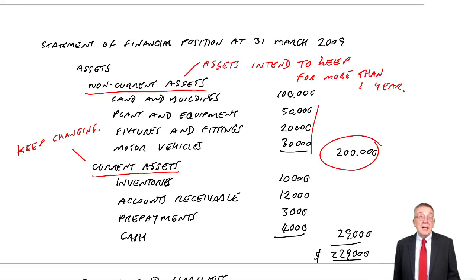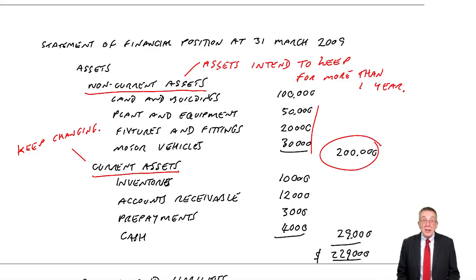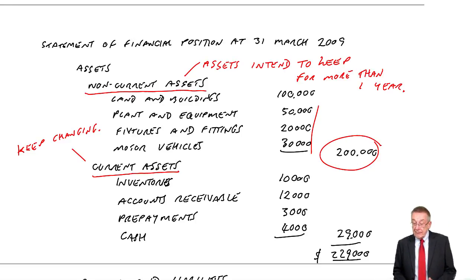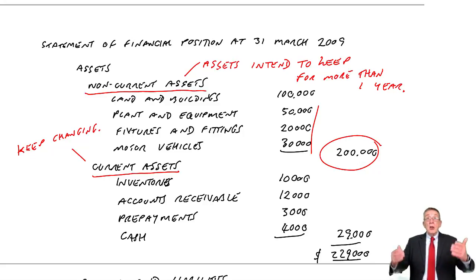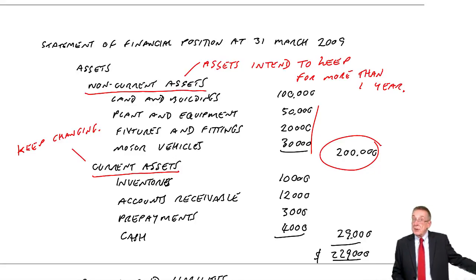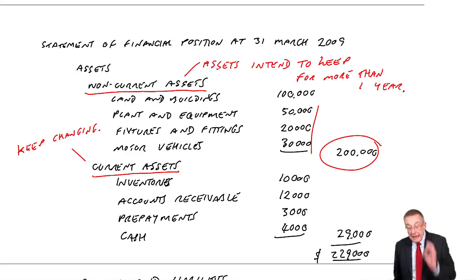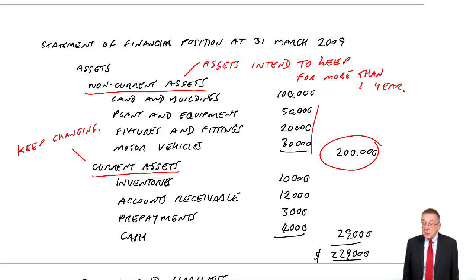As I say, there's a later chapter where I'll go through in detail what it is and how you can be asked questions on it. Apart from that, there are our assets. And the important point is that although we must list all the assets, they have to be split between those two headings — non-current and current.